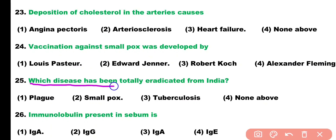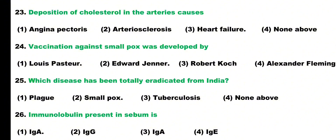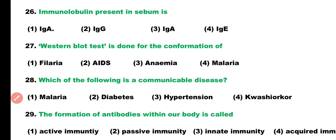Question number twenty-five: which disease has been totally eradicated from India? Options: plague, smallpox, tuberculosis, none of these. Correct answer is option two — smallpox and polio are the two diseases that have been totally eradicated from India.